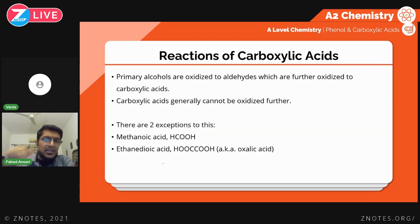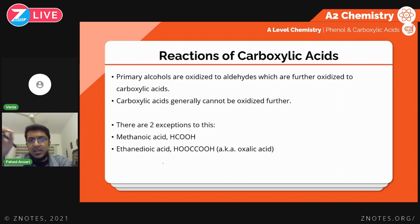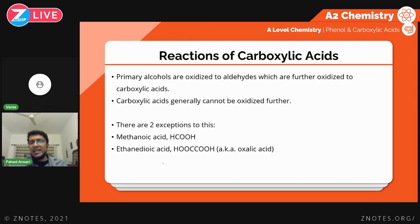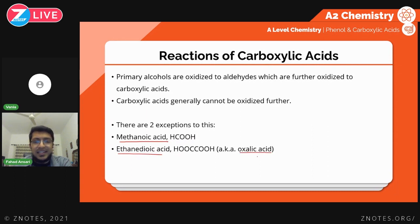Now, reactions of carboxylic acids — most of these were covered at AS level so they won't be revisited here. The main new reactions are the oxidation of carboxylic acids. You studied at AS level that carboxylic acids do not get further oxidized — you can oxidize a primary alcohol or an aldehyde to a carboxylic acid but no further. There are two exceptions: methanoic acid and ethanedioic acid, also known as oxalic acid.